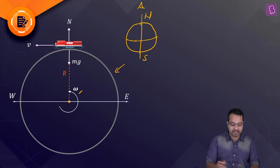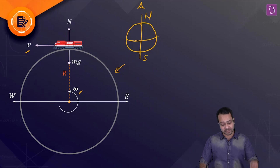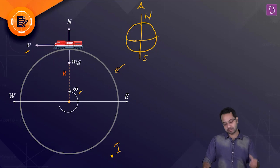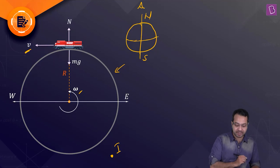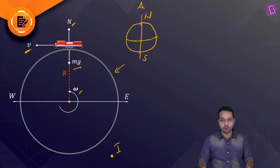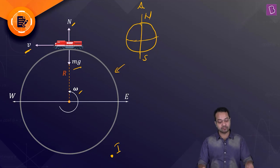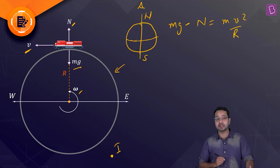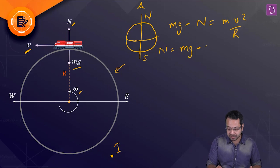Let the train have speed V with respect to an inertial frame. Since the earth rotates it has angular velocity and hence centripetal acceleration, so it is not an inertial frame. Choosing an inertial frame in space, the forces on the train are mg toward the earth's center and normal force N from the track. Since the train moves in circular motion: mg − N = mv²/r, so N = mg − mv²/r.